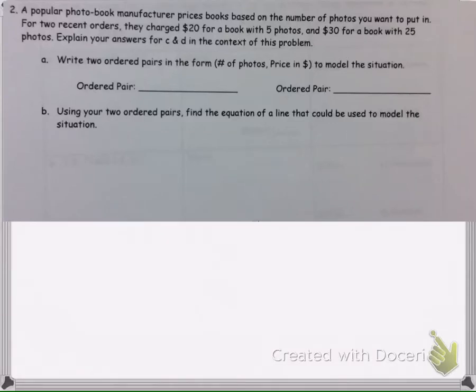A popular photo book manufacturer prices books based on the number of photos you want to put in it. For two recent orders, they charge $20 for a book with five photos and $30 for a book with 25 photos. Explain your answer in the context of this problem for C&D.